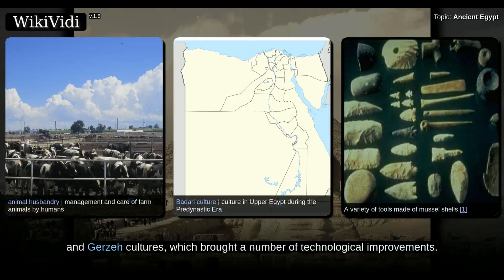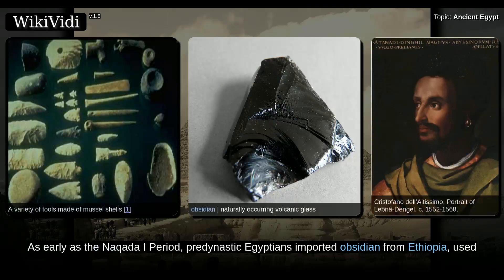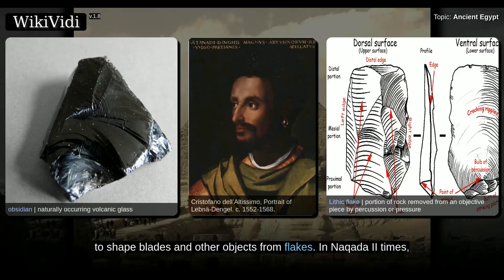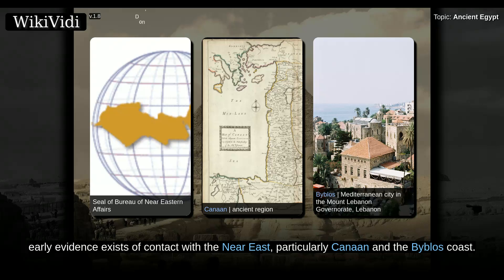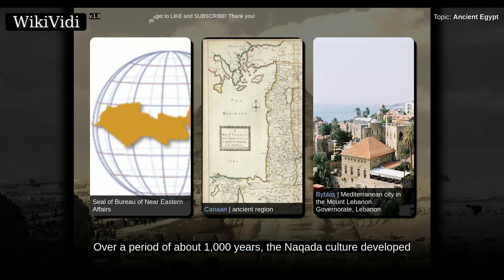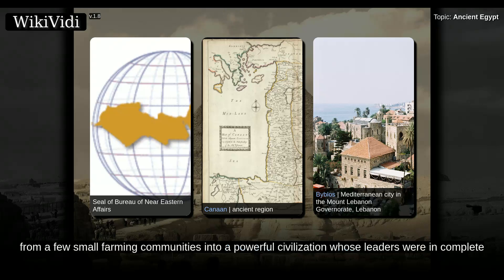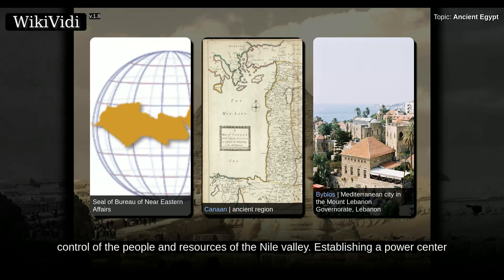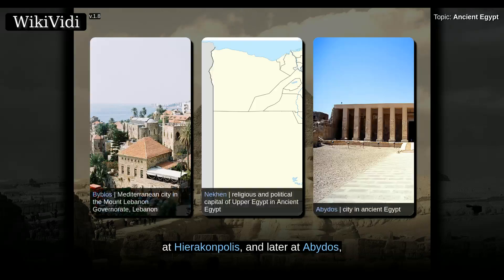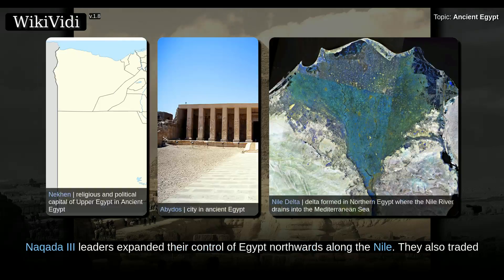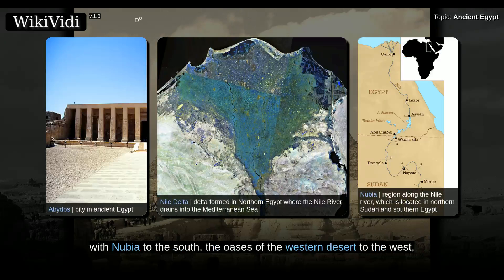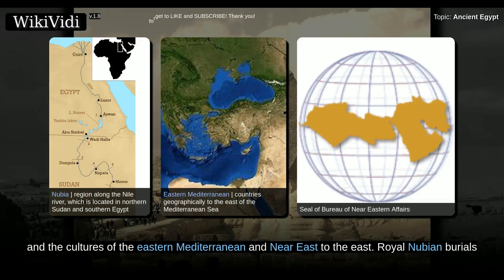The Badarian was followed by the Amratian and Gerzean cultures, which brought a number of technological improvements. As early as the Nakada I period, pre-dynastic Egyptians imported obsidian from Ethiopia, used to shape blades and other objects from flakes. In Nakada II times, early evidence exists of contacts with the Near East, particularly Canaan and the Byblos coast. Over a period of about 1,000 years, the Nakada culture developed from a few small farming communities into a powerful civilization whose leaders were in complete control of the people and resources of the Nile Valley, establishing a power center at Hierakonpolis, and later at Abydos. Nakada III leaders expanded their control of Egypt northwards along the Nile. They also traded with Nubia to the south, the oases of the western desert to the west, and the cultures of the eastern Mediterranean and Near East to the east.